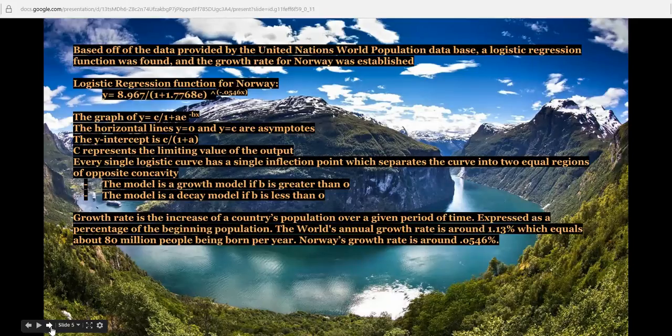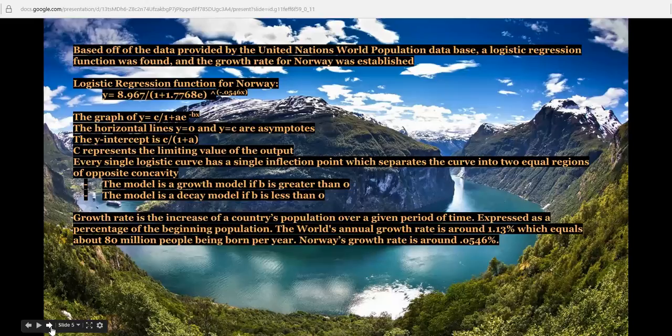Based off of the data provided by the United Nations World Population Database, a logistic regression was found and the growth rate for Norway was established. The logistic regression function for Norway: y equals 8.967 divided by 1 plus 1.776 A e to the power of negative 0.0546x. The graph of y equals c divided by 1 plus ae to the negative bx represents a logistic growth function.